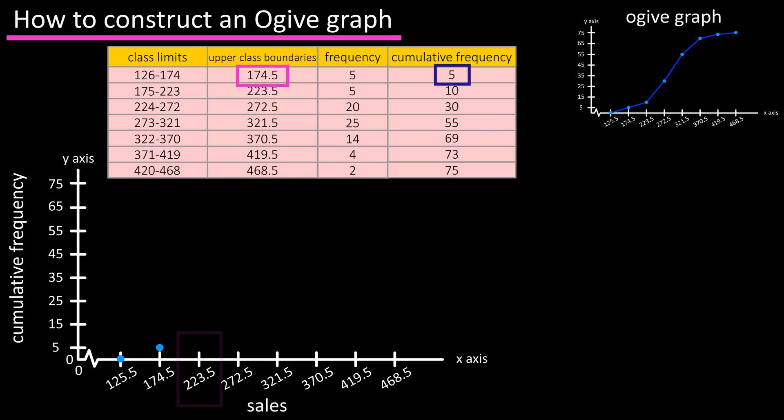Next would be the upper class boundary of class two, 223.5, and our cumulative total or y value equals 10 here. Again, find our point of intersection and plot the next point. And we continue this process for the remaining classes.